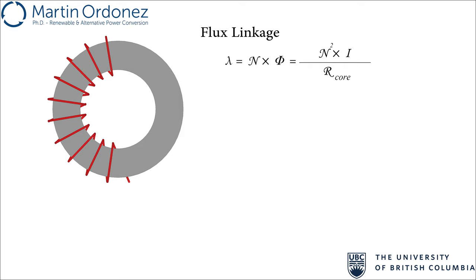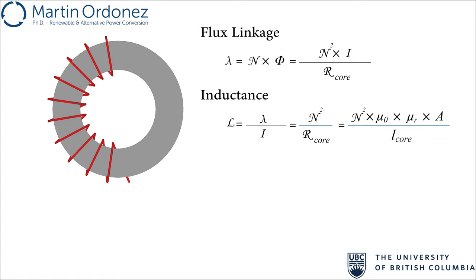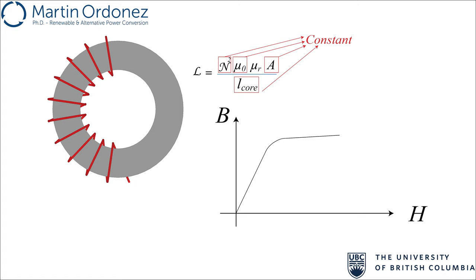Now that we have the flux in the core, we introduce flux linkage. Flux linkage, shown by lambda, is the linking of the magnetic field with the loops of a coil. In simpler terms, flux linkage equals the flux passing through the coil multiplied by the number of turns. Finally, the inductance of a coil is defined as the flux linkage divided by the current generating that flux. By dividing flux linkage by current and replacing terms, we find the inductance as the square of the turns divided by the total reluctance.